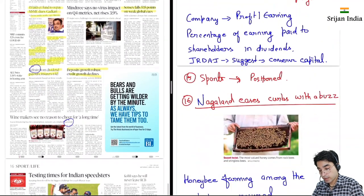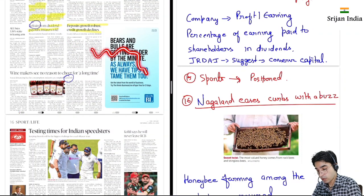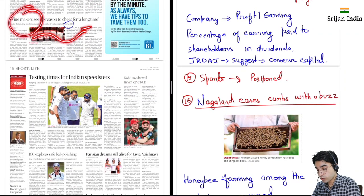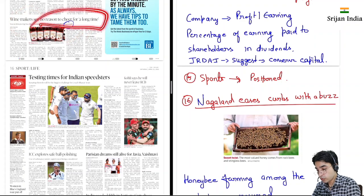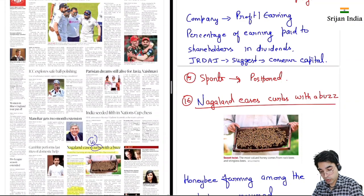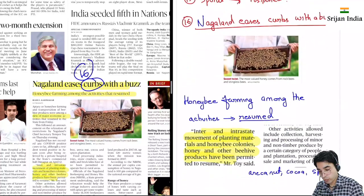Then sports mein meanwhile — yahan pe deposit growth hai, robust hai. Credit growth decline ho rahi hai kyunki economy stand still pe aa gayi hai. Then winemakers ko bhi kaafi problem ho rahi hai — no reason to cheer for long time. Then sports bhi again — substantially postpone ho gayi hain saari cheezein.